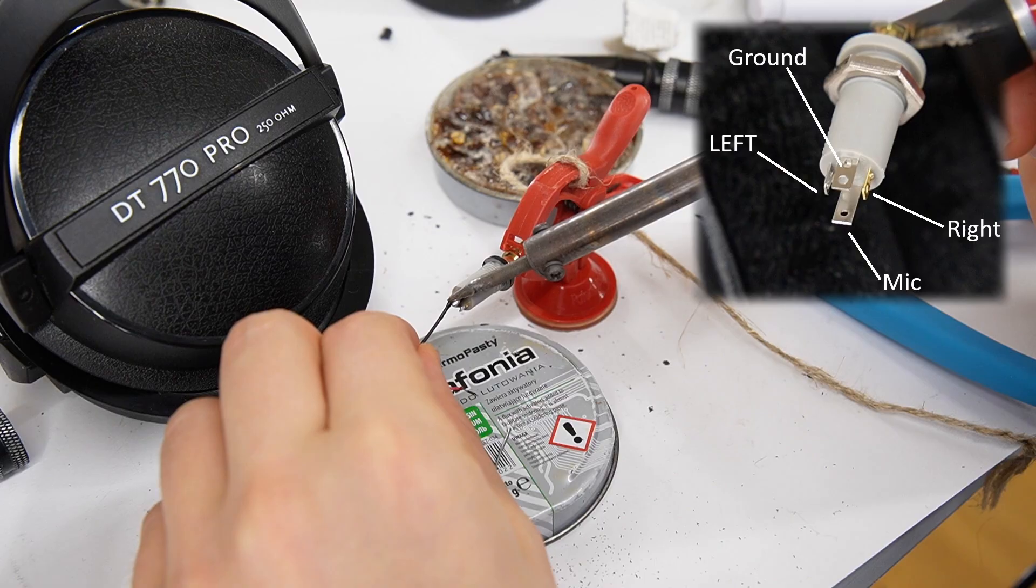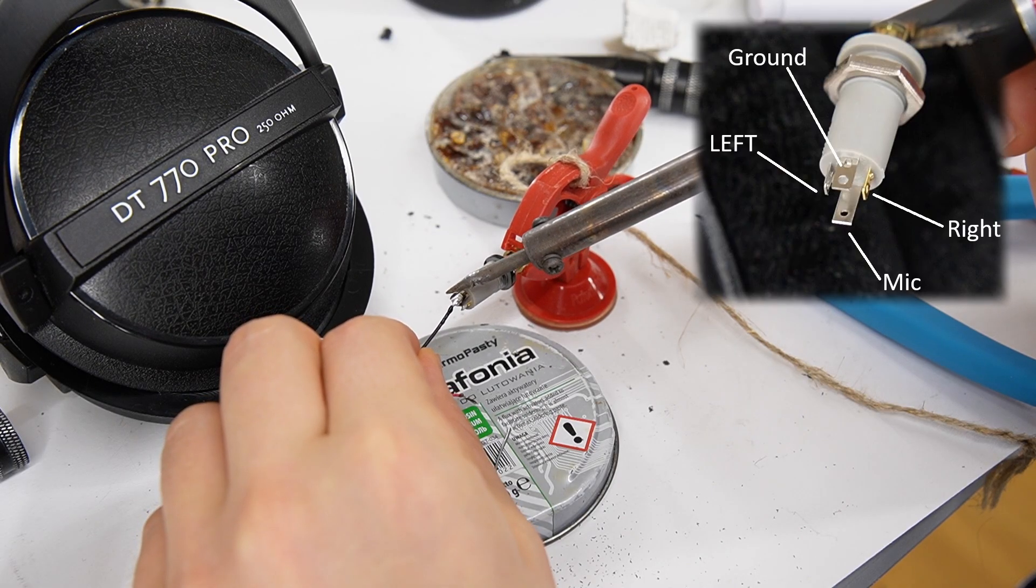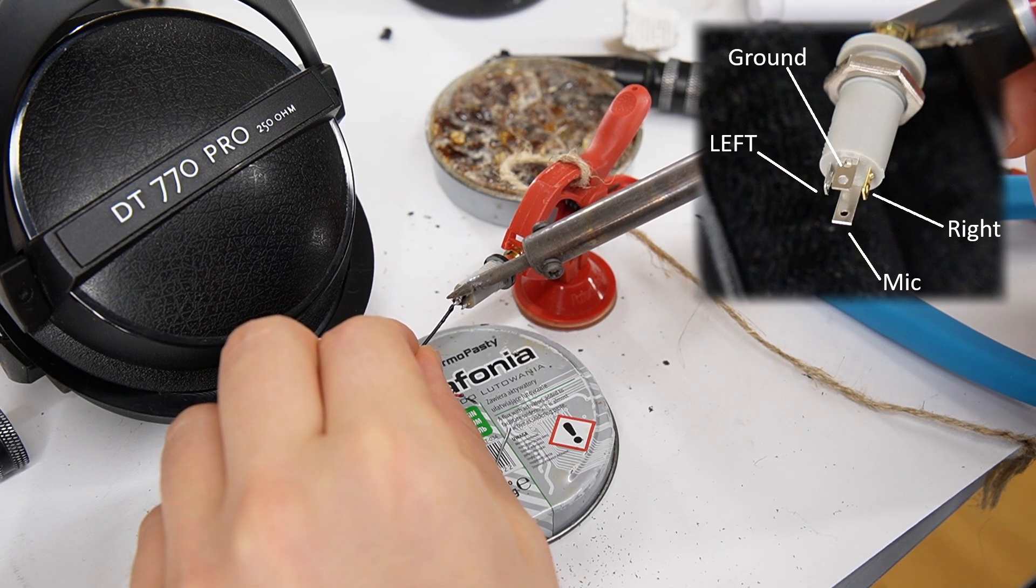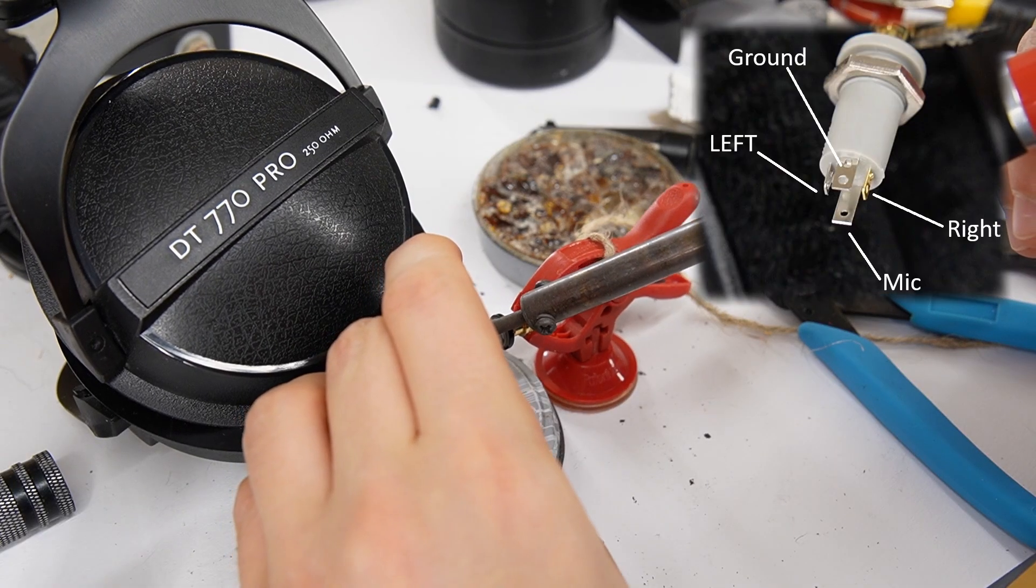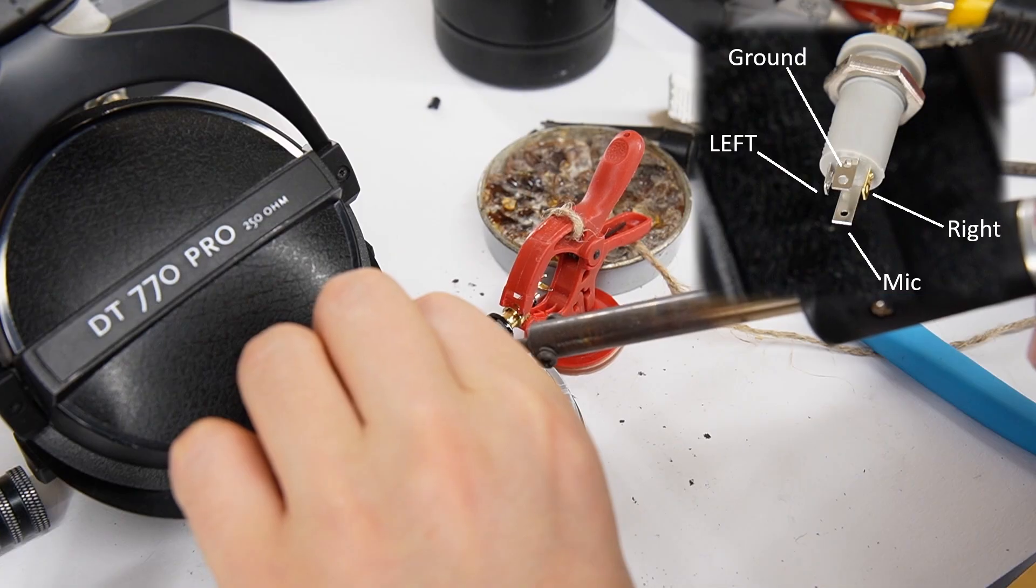Now solder the wires. In my case, black is ground, but always double-check the color layout. It can be different on other headphones. Then solder the red wire, right channel, and the white wire, left channel.